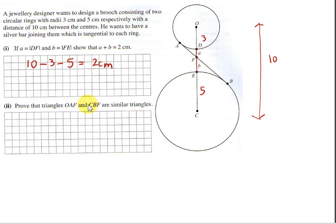Prove that triangles OAF and CBF are similar triangles. Well, actually they are both right angle triangles as we will see. Now let's look at the angles in these triangles.